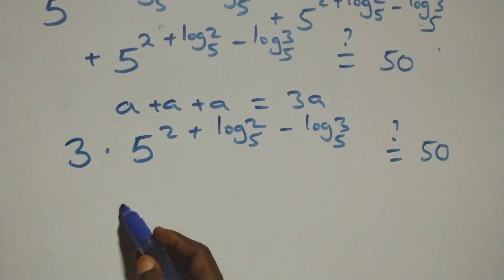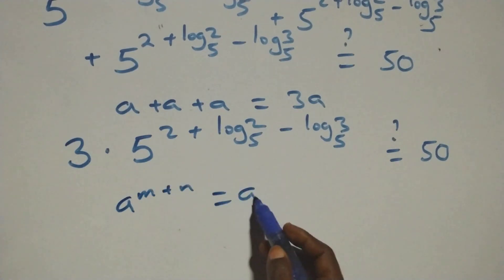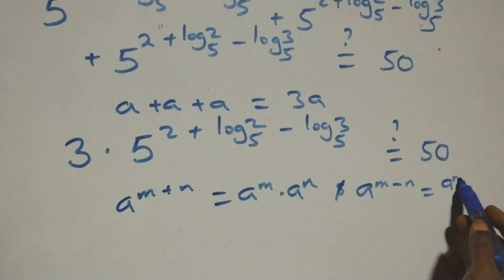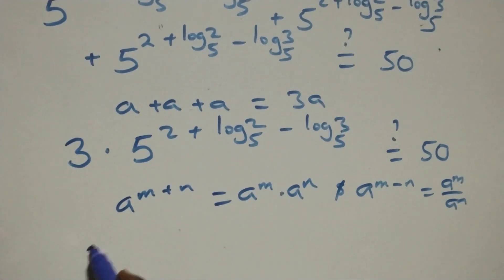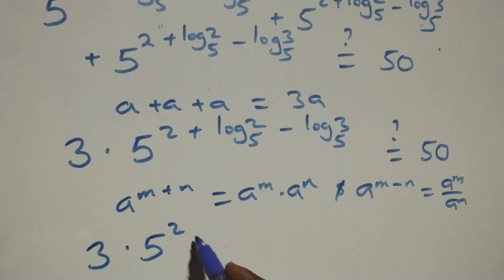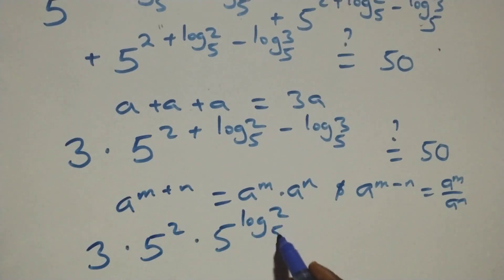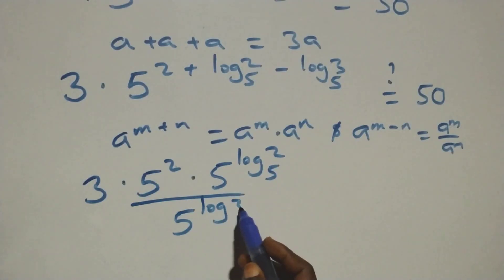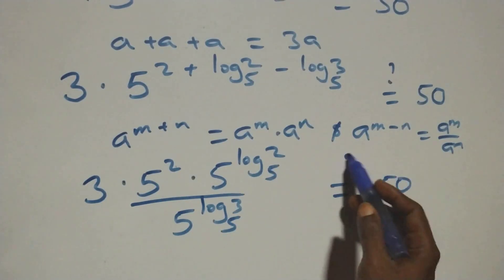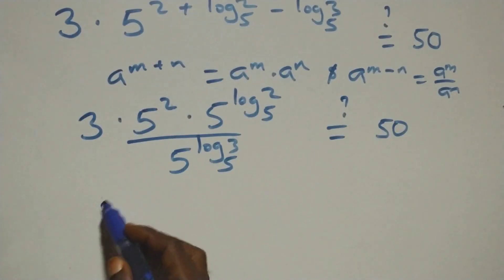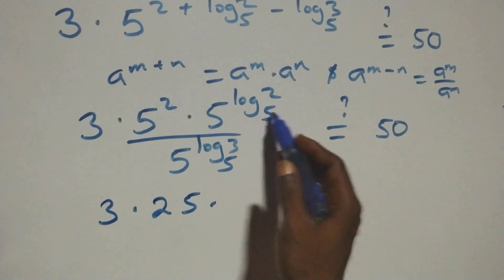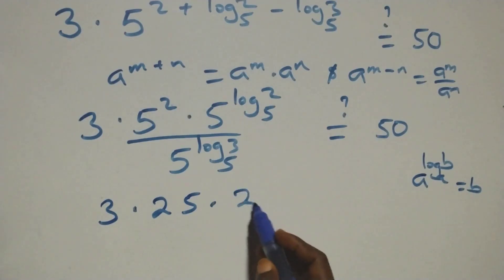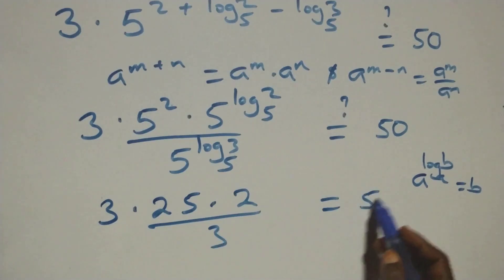Using the law of indices, a raised to power (m+n) equals a^m times a^n, and a^(m-n) equals a^m over a^n. So we have 3 times 5² times 5^(log₅2) divided by 5^(log₅3), which equals 3 times 25 times 2 over 3, which equals 50.